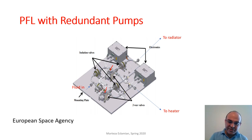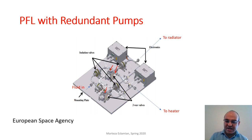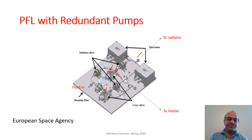The fluid passes through the primary pump's valve and then through the pump itself. At the three-way valve, a temperature sensor measures the incoming fluid. Based on the fluid temperature, the valve decides whether the fluid goes to the heater or toward the radiator. If the temperature is low — for instance during eclipse — the fluid is directed to additional heaters to raise its temperature.